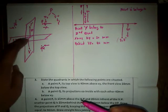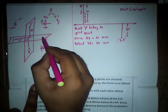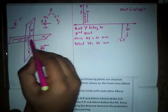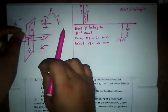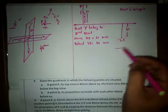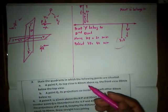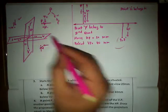The front view Q dash is below the XY reference line. Looking at the top view, small q appears, and on rotating the horizontal plane downwards, Q also goes below the XY reference line. Both Q and Q dash are below XY at 40 mm each.